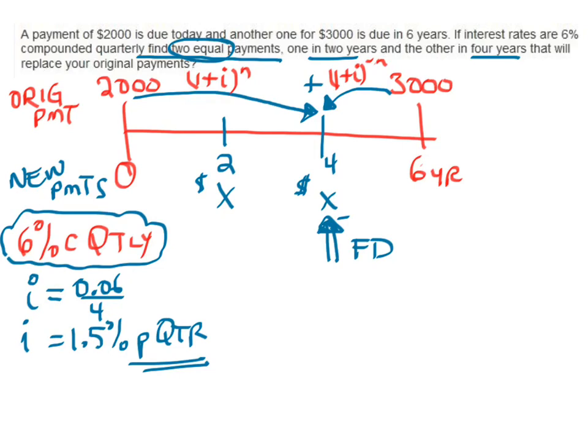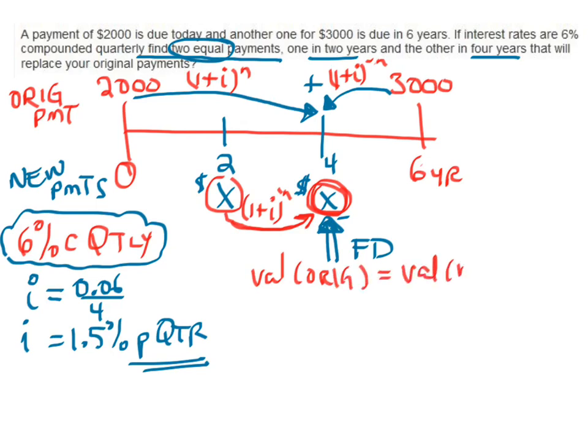I'm going to set that equation of values equal to the equation for the new payments. For the new payments, I only need to add compound interest on the first payment for two years, so I'm multiplying by (1 + i) to the positive N. For the second one, I don't have to move it at all. The value of the original payments should equal the value of the new payments at the focal date.